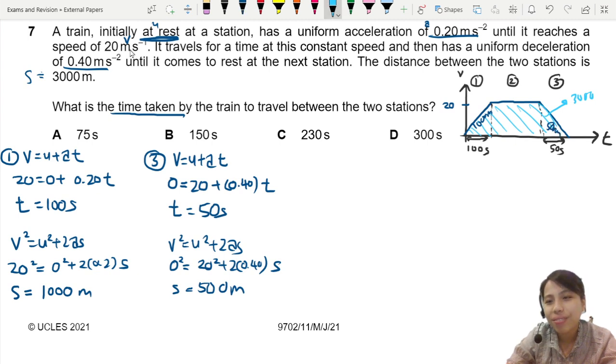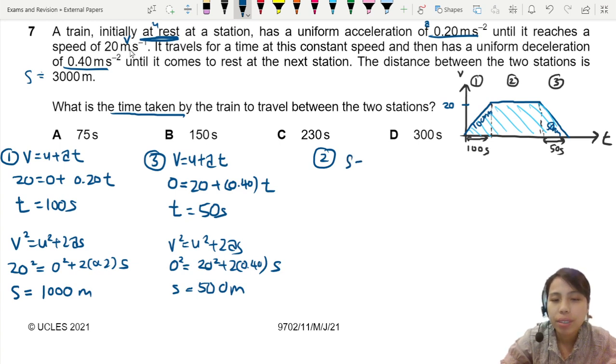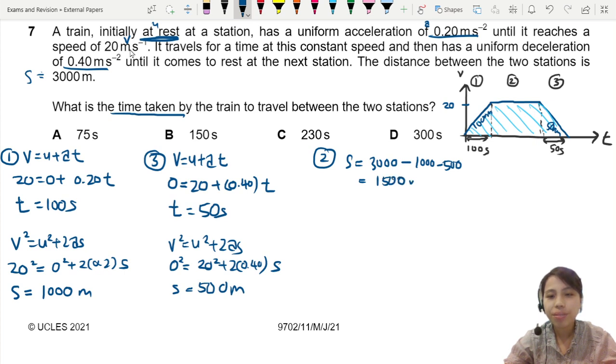So what is left? You already travel. Let's do section 2 now. To find the distance you travel. Total distance was 3,000. You already travel 1,000. You already travel 500. So what is left? I think it's 1,500. Means this part is 1,500 meter, which is the area and the displacement.